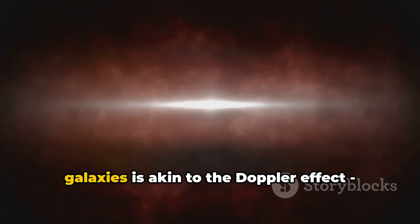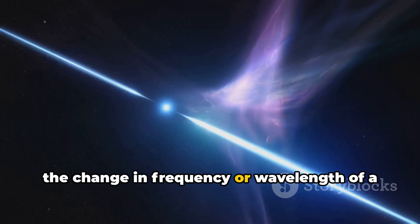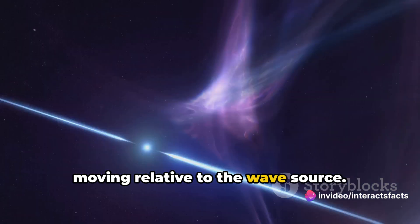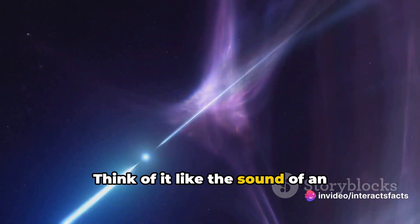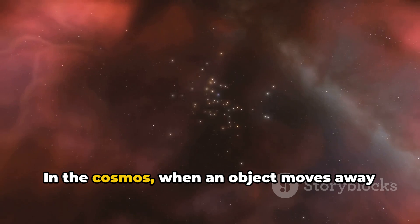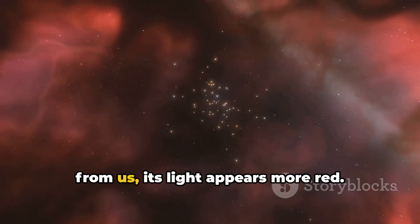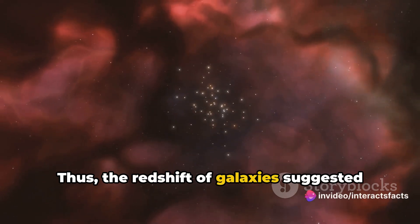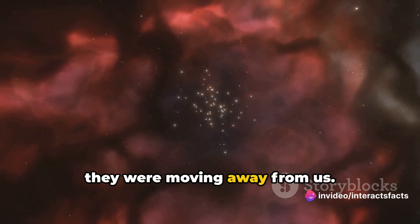The redshift of light from distant galaxies is akin to the Doppler effect, the change in frequency or wavelength of a wave in relation to an observer who is moving relative to the wave source. Think of it like the sound of an ambulance siren changing as it speeds past you. In the cosmos, when an object moves away from us, its light appears more red. Thus, the redshift of galaxies suggested they were moving away from us.